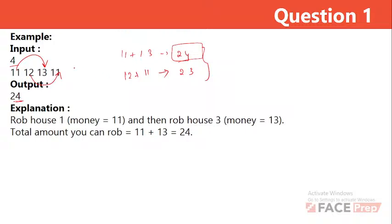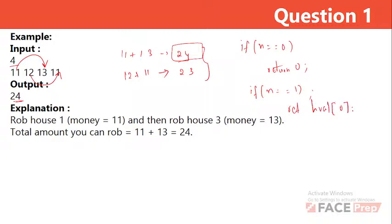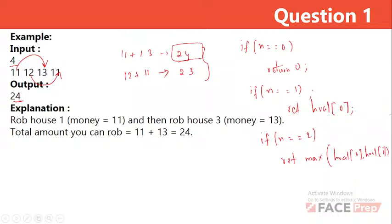I'll define a function with two parameters and first handle the base cases. If the size of the array is 0, there are no houses, so return 0. If the number of houses is 1, return that single house value (index 0). If the number of houses is 2, return the maximum of the two values — house[0] and house[1].